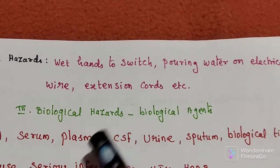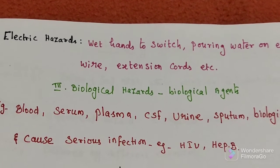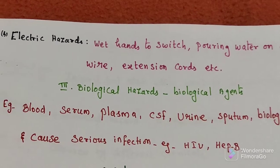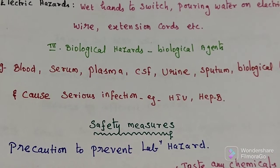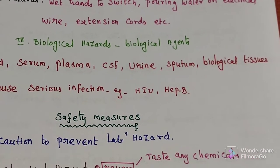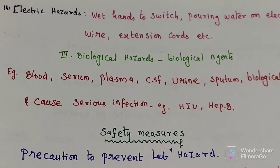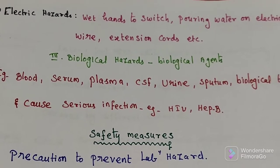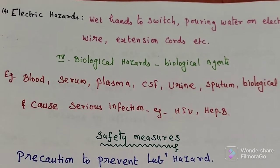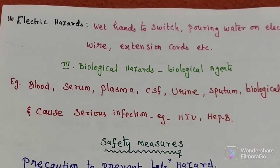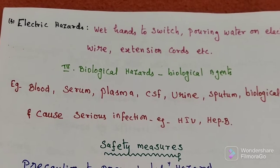The last type of hazard is biological hazard, which occurs due to different biological agents. Examples include blood, serum, plasma, CSF, urine samples, sputum, and biological tissue. These can cause serious infections such as HIV and hepatitis B viral infection.